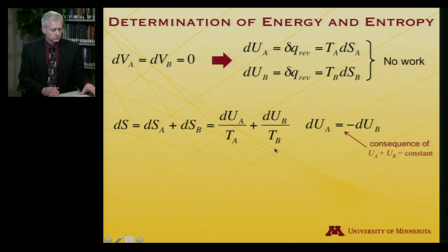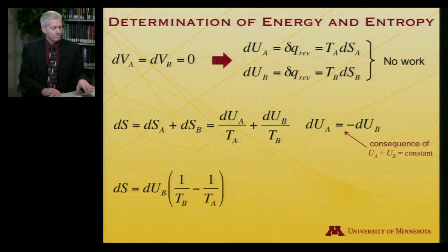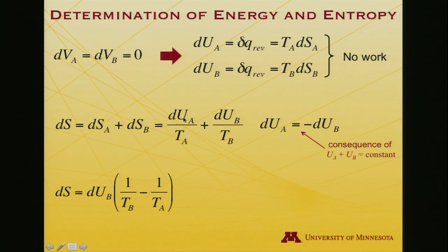Since uA plus uB must be constant, d(uA + uB) equals zero, which means dU_A must be the negative of dU_B — any energy change in A must have come from B. Given that, we can replace dU_A with minus dU_B over T_A, so dS equals dU_B times (1/T_B minus 1/T_A).